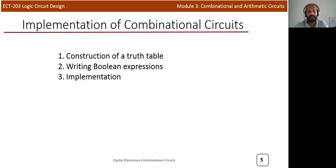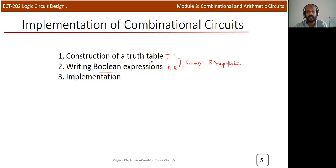When we want to design a combinational circuit, there are three steps we follow. First, we need to write the truth table for that particular circuit or question. After that, from that truth table we need to write the Boolean expression — either by simplifying using a K-map or by Boolean simplification methods. After deriving the Boolean expression, we implement the particular circuit using gates.